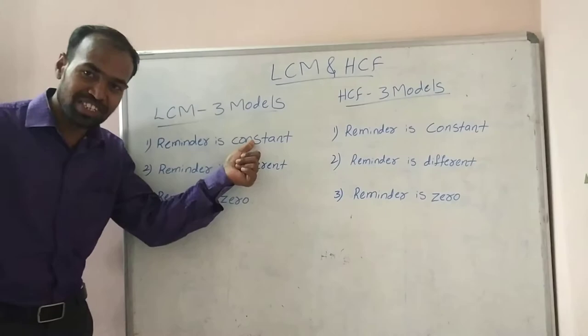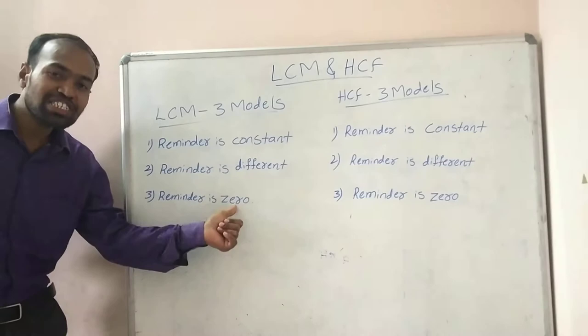For LCM, there are three models. The first one is where the remainder is constant. The second one is where the remainder is different. The third one is where the remainder is zero.